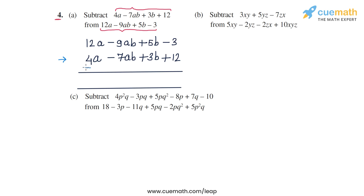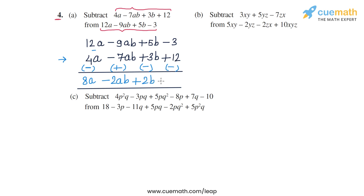So 4a will become minus 4a, minus 7ab will become plus 7ab, 3b will become minus 3b, and plus 12 will become minus 12 — the signs change for the second expression. So we have 12a minus 4a which becomes 8a, then minus 9ab plus 7ab which becomes minus 2ab, and minus 3 minus 12 which is minus 15.